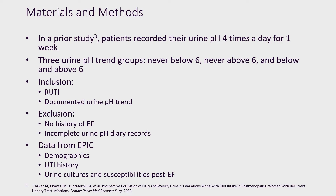In order to determine the patient's urine pH trends, in a previous study we sent patients home with their own urine dipsticks and asked them to record their pH four times a day for a week. Again, three groups were identified. Patients were included in the study if they had a history of recurrent UTIs and excluded if they had not undergone electrofulguration.